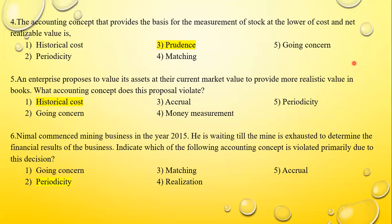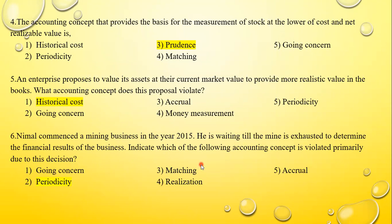Question six: Nimal commenced a mining business in 2015 and is waiting until the mine is exhausted to determine the financial results. Which accounting concept is primarily violated by this decision? He has to make financial statements after 12 months. The answer is the periodicity concept — you cannot wait until the end; you have to divide your lifetime into accounting periods and prepare financial statements.